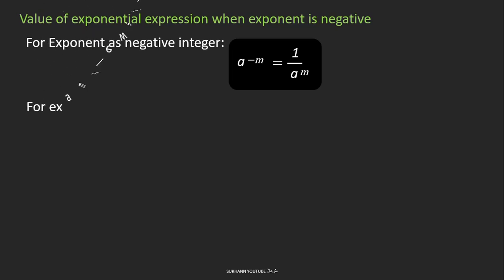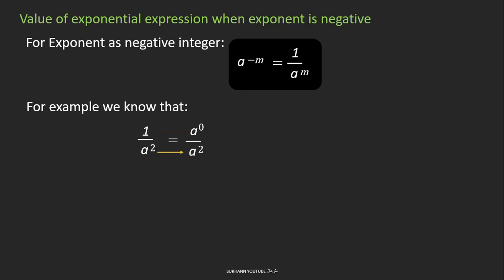To understand this clearly, look at the following example: suppose we have 1 over a to the power 2. Any value with a power of 0 equals 1, so we may write the numerator as a to the power 0. Since both numerator and denominator have the same base, we bring it up and subtract the exponents, then it becomes minus. We get a to the power minus 2. This is a property of the exponent laws.